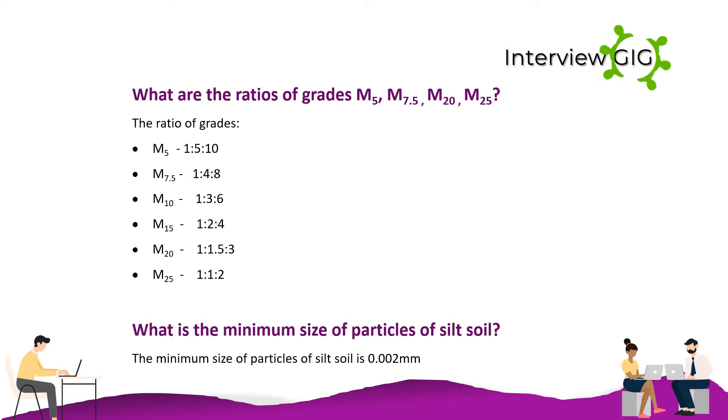What is the minimum size of particles of silt soil? The minimum size of particles of silt soil is 0.002 mm.